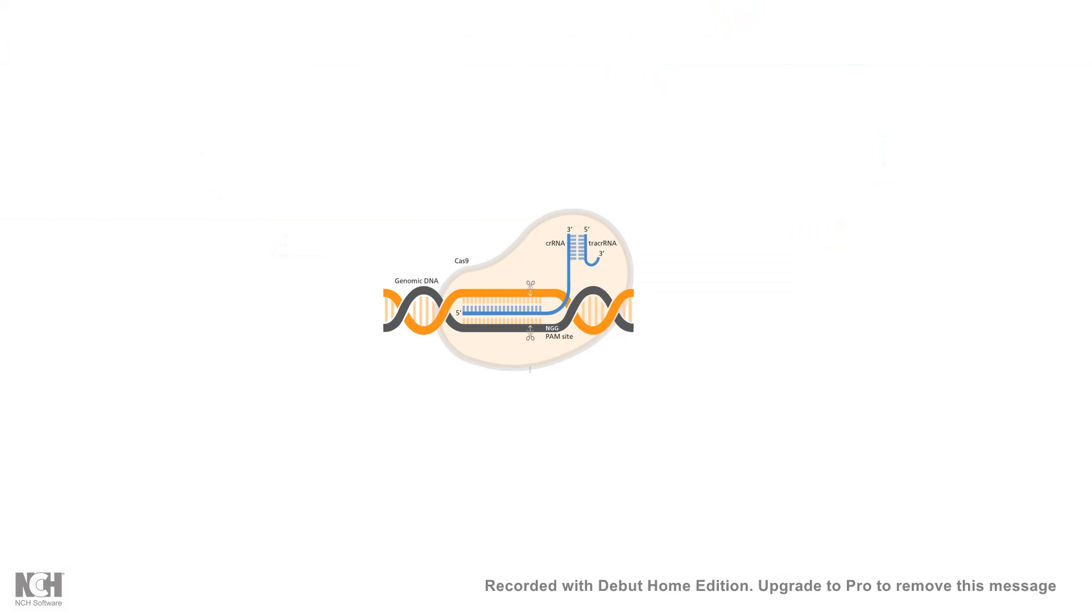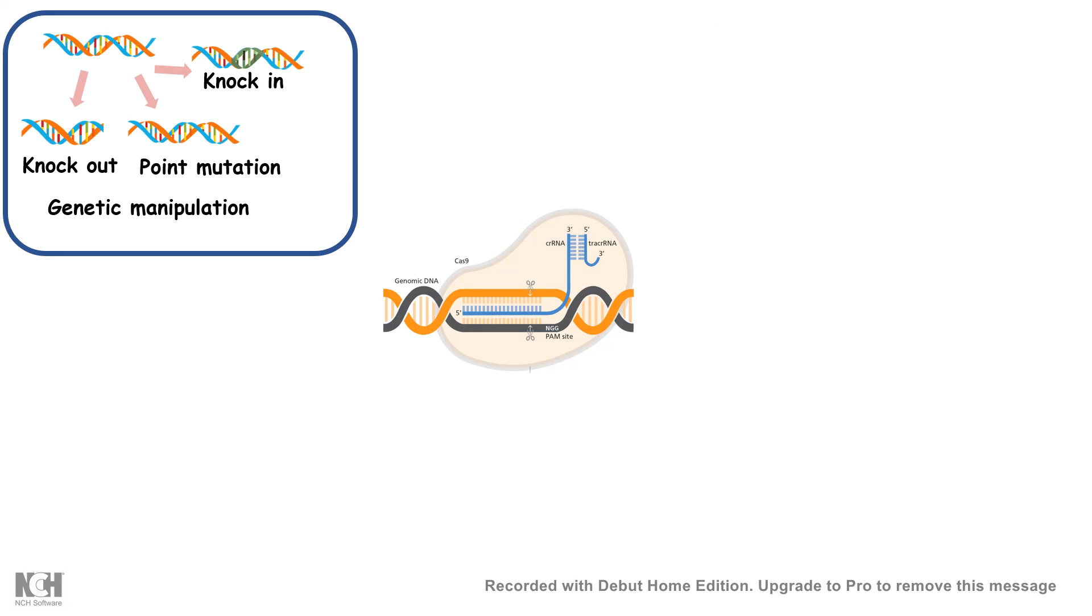Not only these things, CRISPR can be used for diverse functions. For example, CRISPR can be used for genetic manipulation, creating knockouts, knock-ins, point mutations, etc.